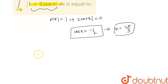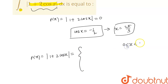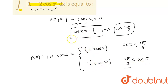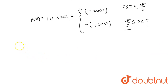So here we can define our function f(x) = |1 + 2cos x| as follows: when x belongs to [0, 2π/3], this term is positive, so the modulus opens as 1 + 2cos x. And when x belongs to [2π/3, π], the function is negative, so modulus opens as −(1 + 2cos x). You can verify by substituting any value in these intervals.